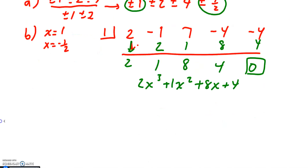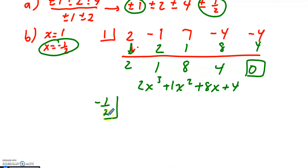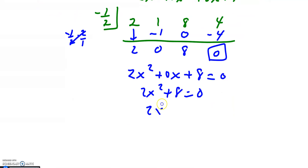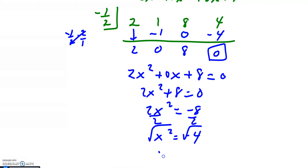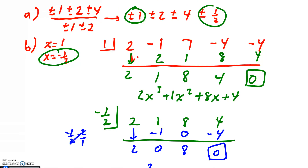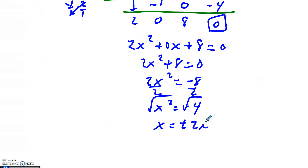Based on the graph, negative one half is the next root. Please pause and do synthetic division again using that root with the new polynomial. After the second synthetic division, you should have 2x squared plus 0x plus 8. Setting 2x squared plus 8 equal to 0, I subtract 8 and divide by 2 to get x squared equals negative 4. Taking the square root gives two imaginary answers: plus or minus 2i. So I've found all my zeros — two rational ones and two imaginary.